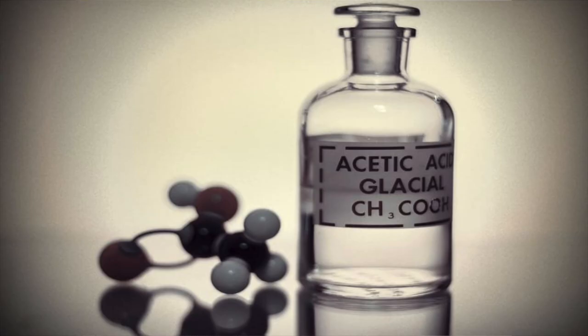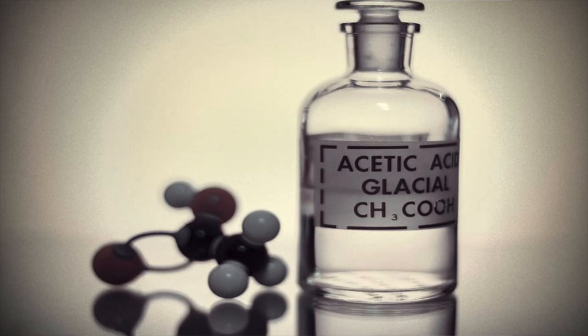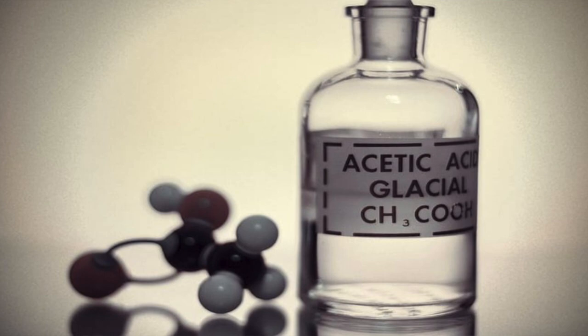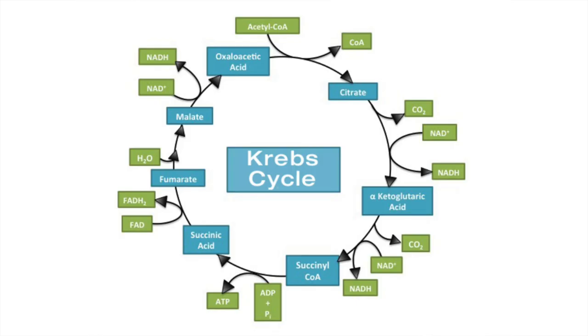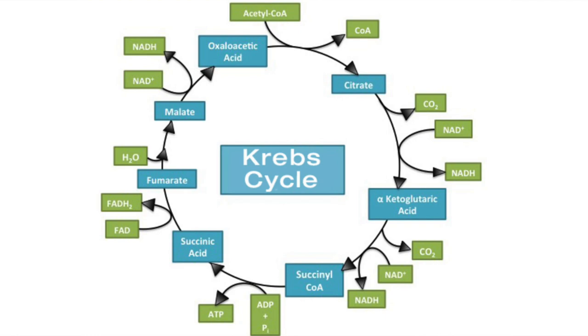Acetic acid is a clear, colorless organic acid with a pungent odor, used as a solvent in rubber, plastic, pharmaceutical, and photographic industries. Acetic acid is one of the simplest carboxylic acids, containing only two carbon atoms. As we all know from our pre-clinical years, acetic acid is important in the metabolism of sugar and fat, and it forms an integral part of the Krebs citric acid cycle.